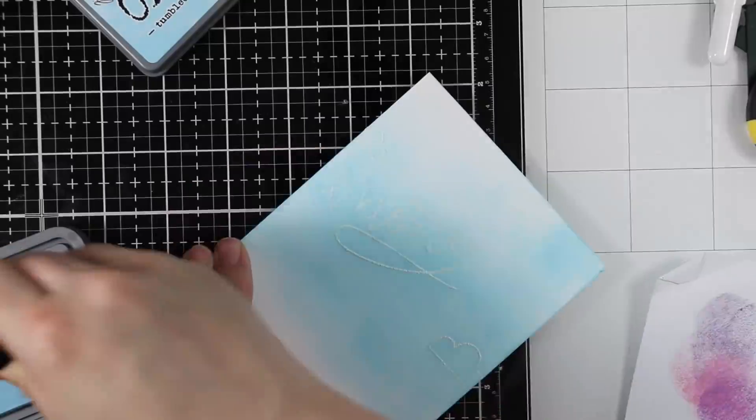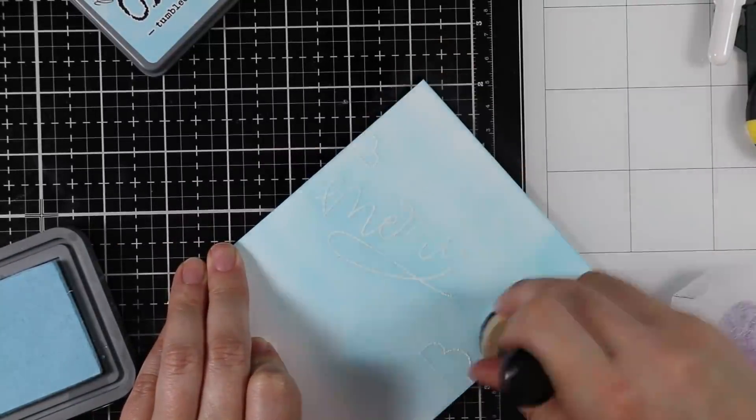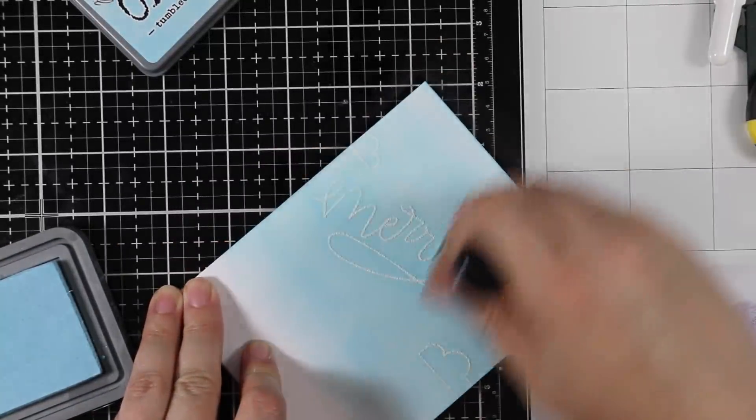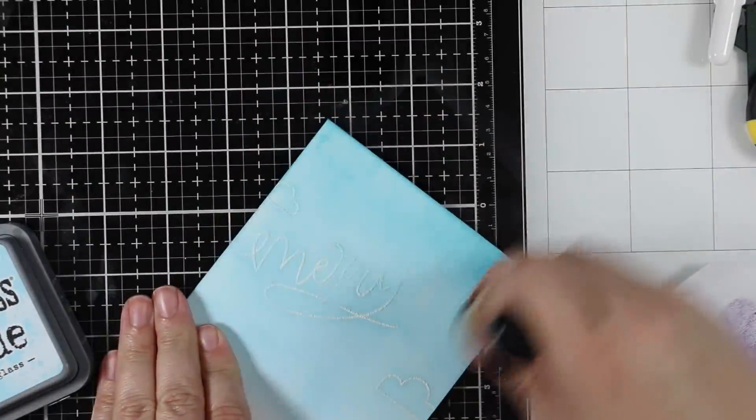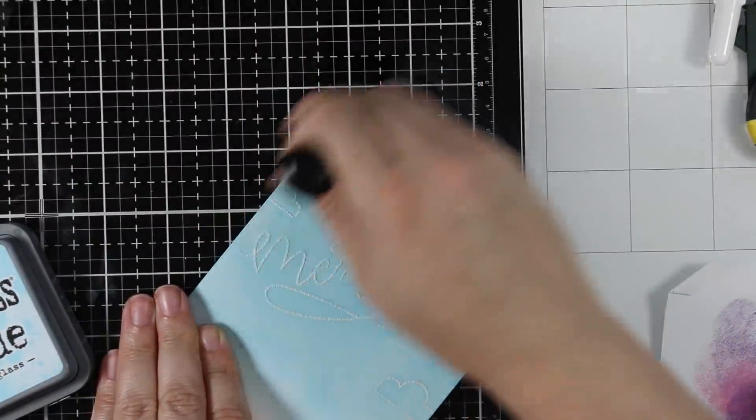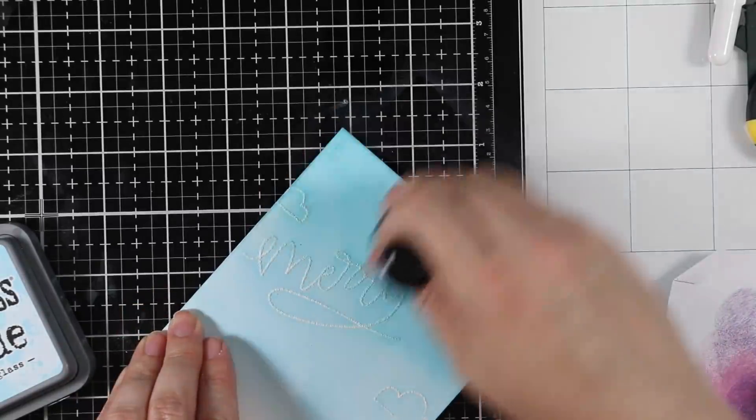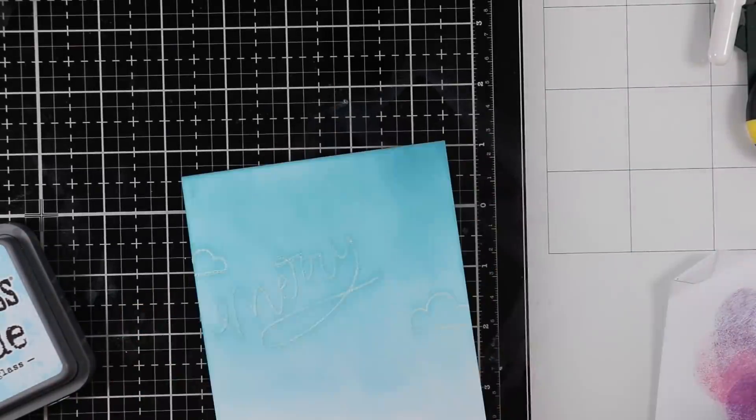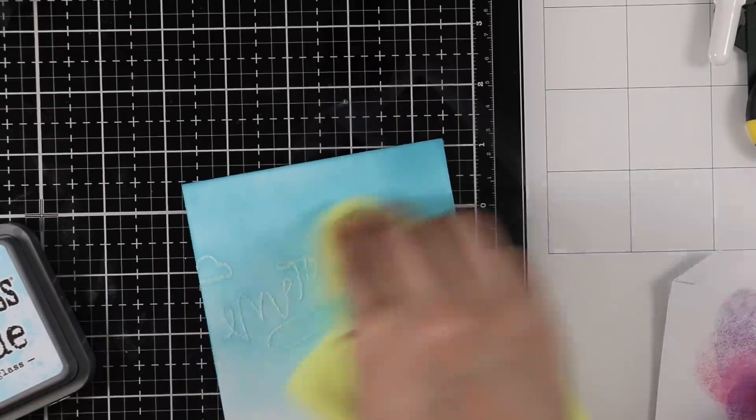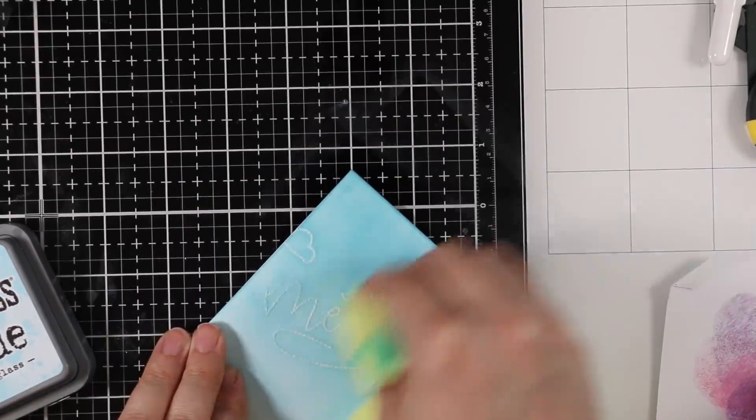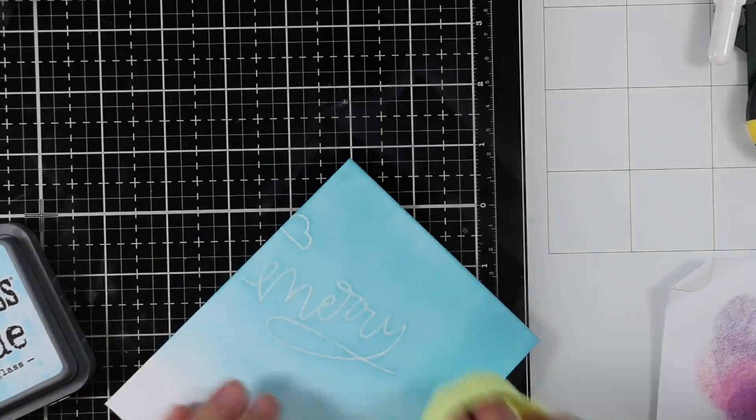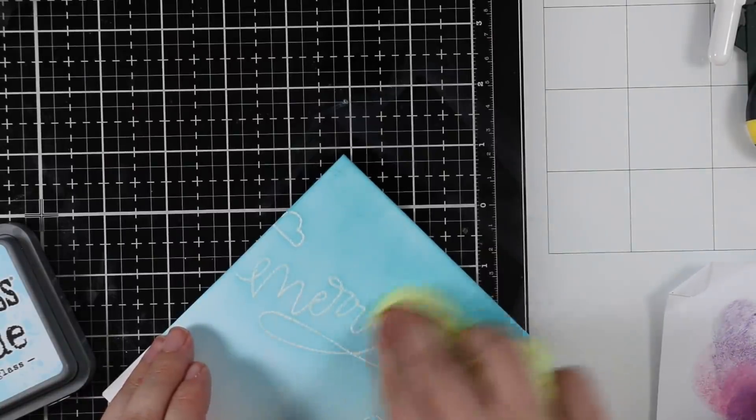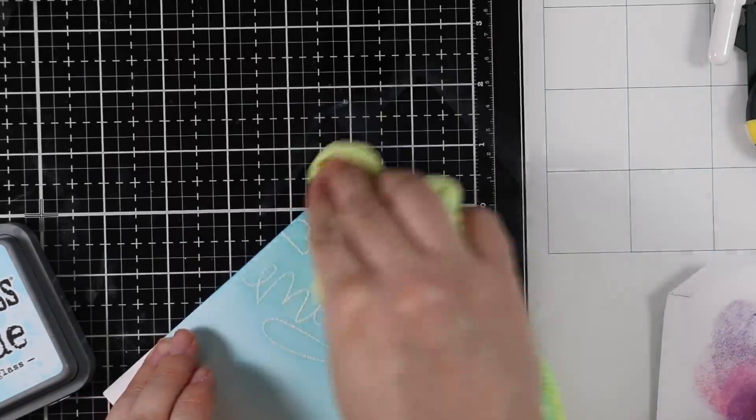I did emboss resist, but I don't get quite the same result because the ink I'm blending with the oxide inks gets all over the embossing. I am able to remove most of that with a microfiber cloth, but that kind of dulls the puffiness of the embossing because it removes some of it.